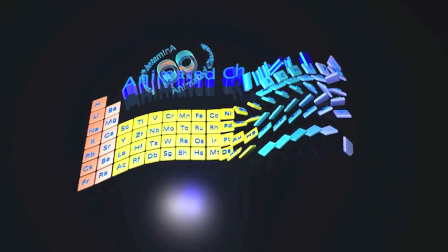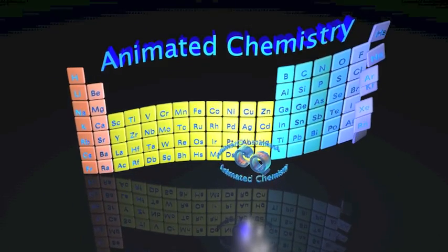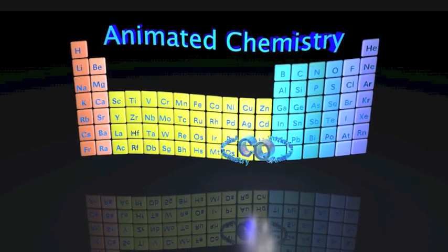We're going to use the periodic table because we want to talk about a very important element, which is carbon, one of the stars of modern chemistry because it's present in almost every compound around us.